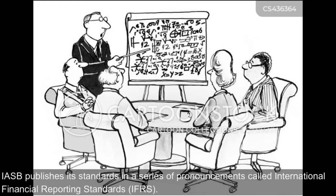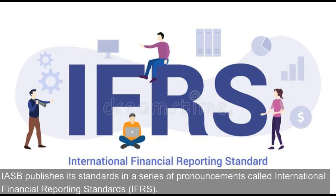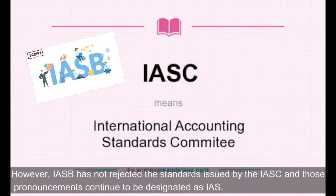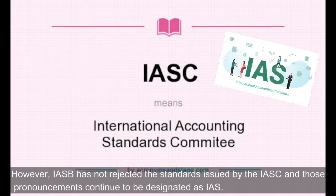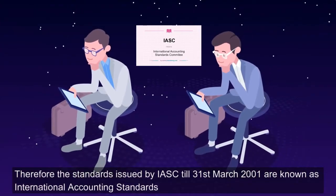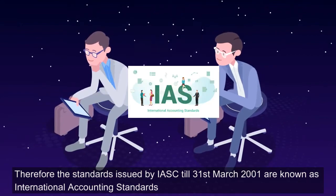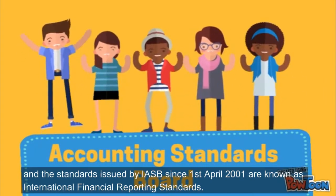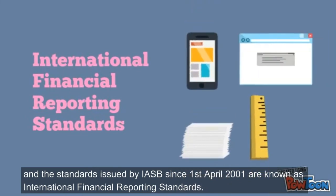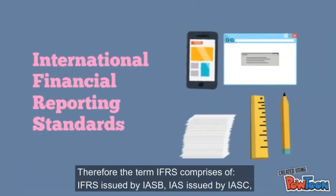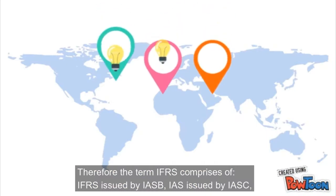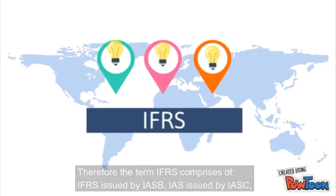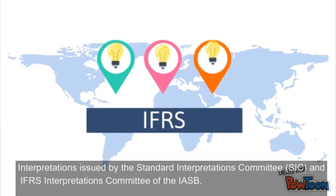IASB publishes its standards in a series of pronouncements called International Financial Reporting Standards. However, IASB has not rejected the standards issued by IASC, and those pronouncements continue to be designated as IAS. Therefore, the standards issued by IASC till 31st March 2001 are known as International Accounting Standards. The term Financial Reporting Standards comprises of IFRS issued by IASB, IAS issued by IASC, and Interpretations issued by the Standard Interpretations Committee and IFRS Interpretations Committee of the IASB.